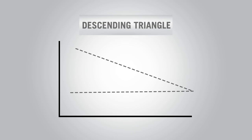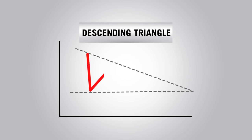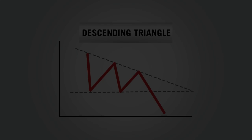The descending triangle is also a variation of the symmetrical triangle. Descending triangles are usually found in downtrending markets and are most reliable when found in these downtrends. The bottom part of the triangle appears flat, while the top part of the triangle has a downward trend line. The price will get closer to the support before breaking out below it.